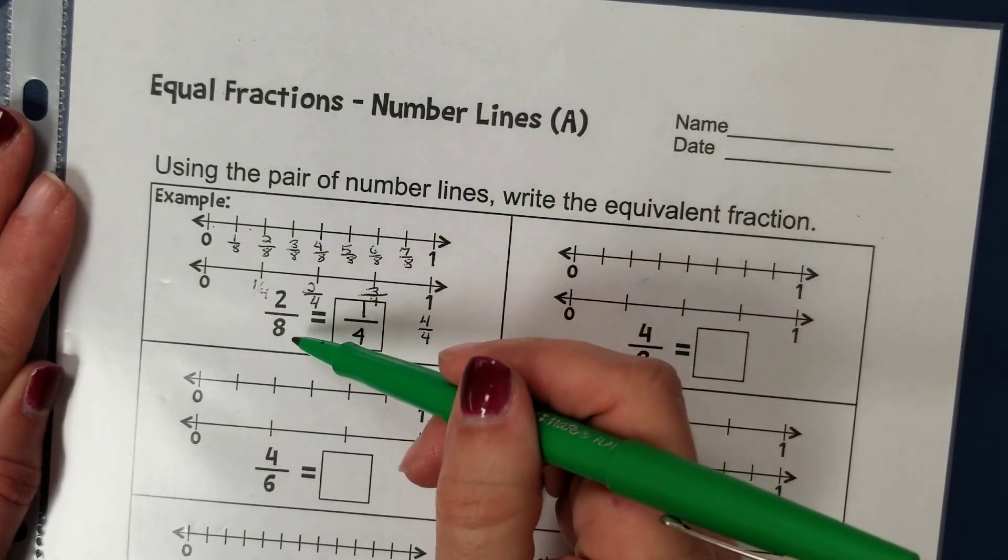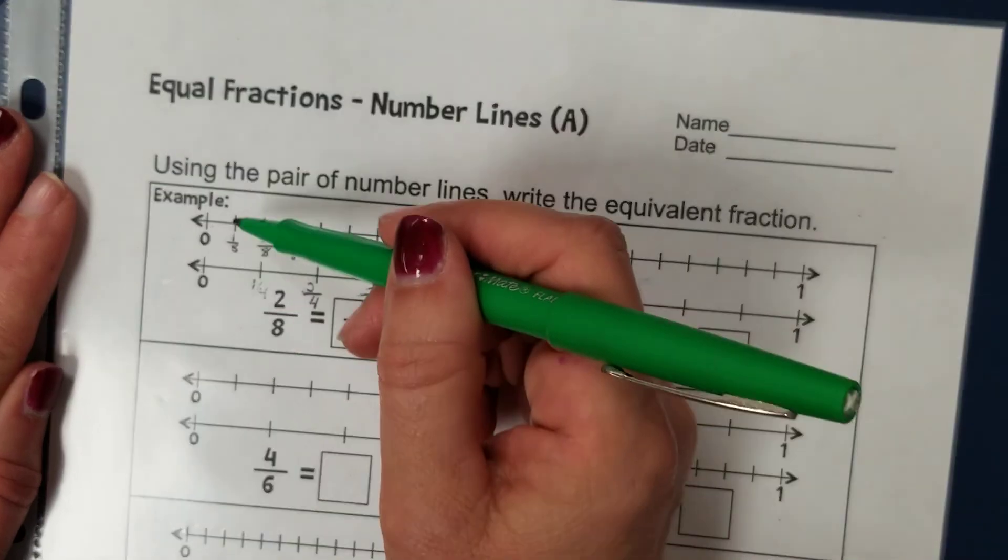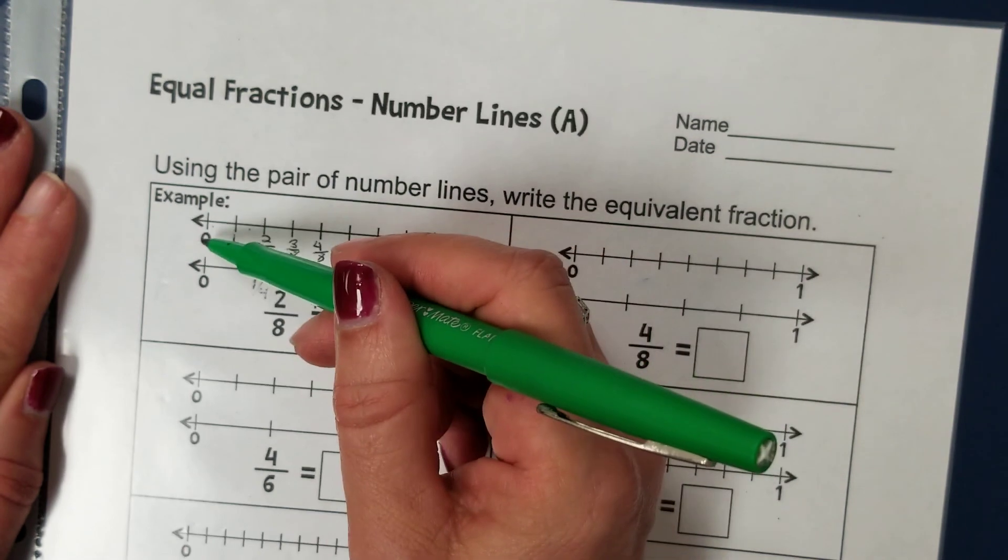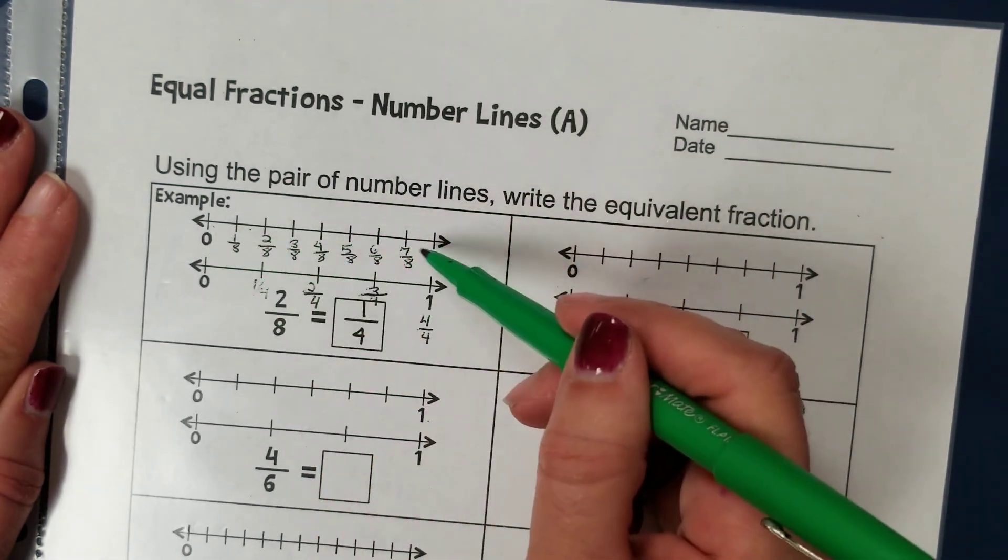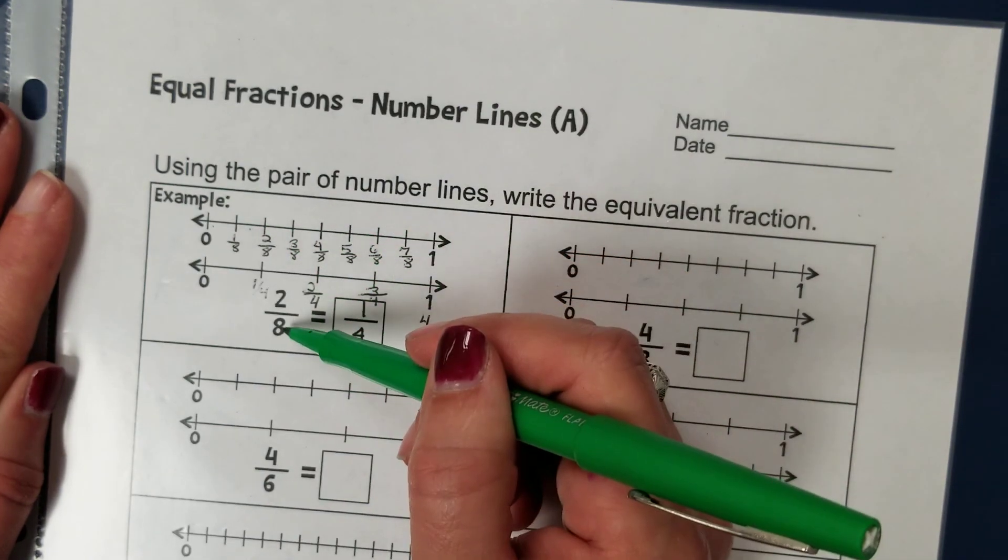we want to first figure out what that denominator is. The denominator is determined by the number of parts that your whole is broken into. So on this number line between zero and one, if I went down and counted each of those parts, I would find that I would have eight.